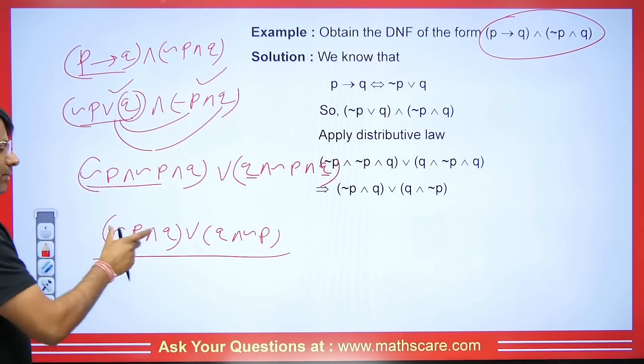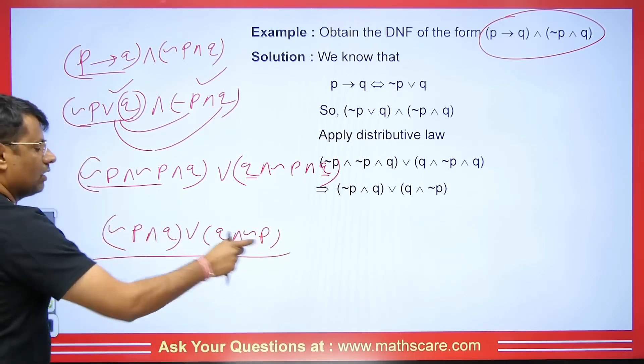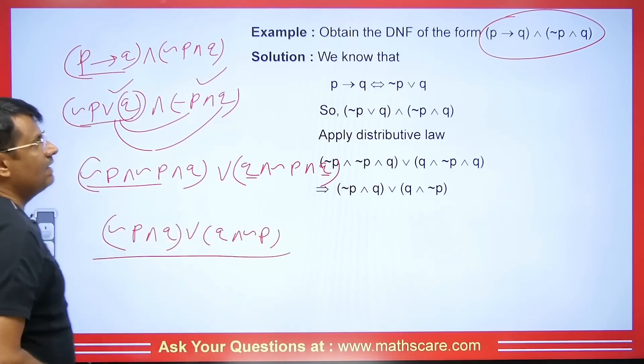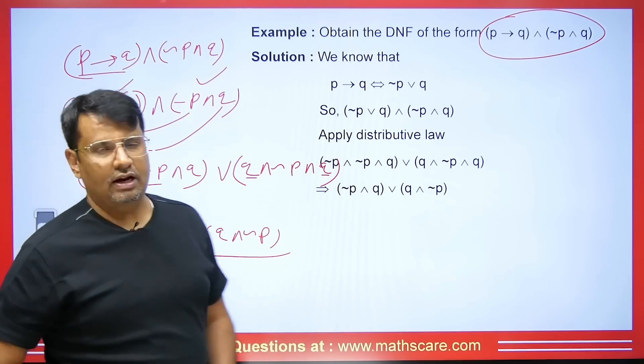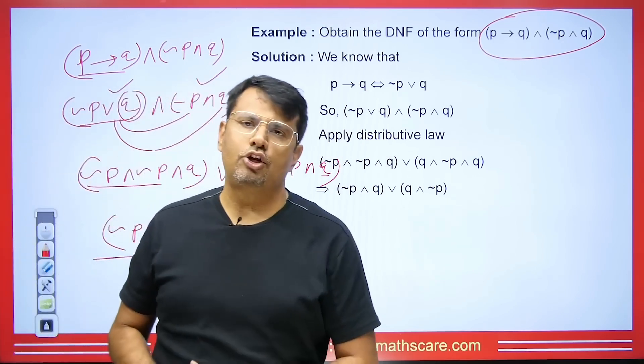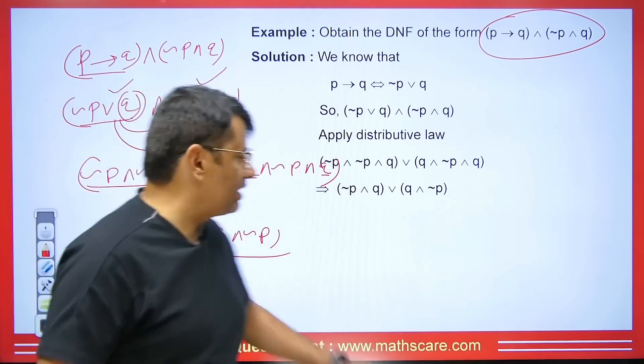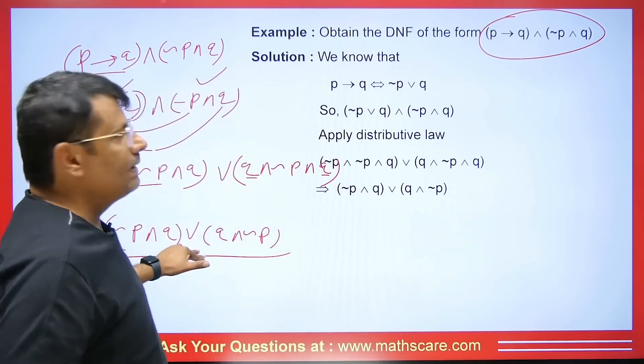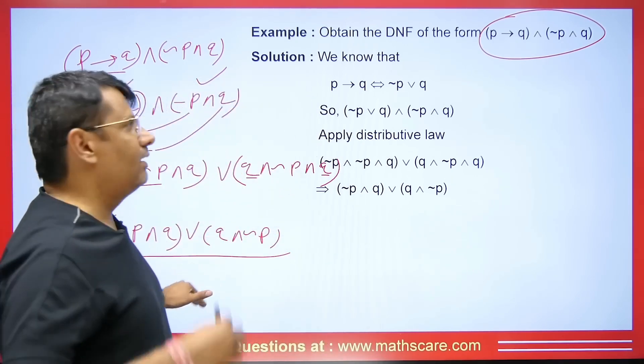This will become Q AND negation of P — and that is the DNF form. We have a conjunction here and disjunction in between. This is the normal form, so we can easily make it stable.